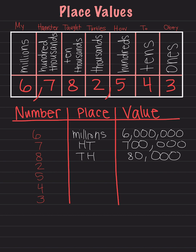Now we will move on to the 2. The 2 is in the thousandths place, so I will write thousands. The value of the 2 is 2 — we put a comma and three zeros, which is 2,000.